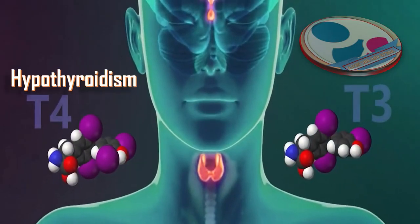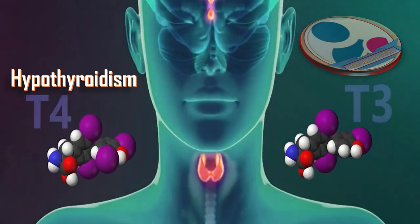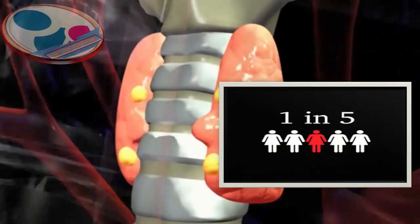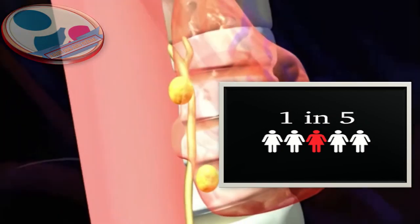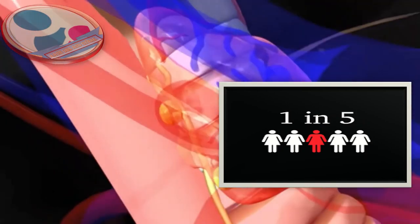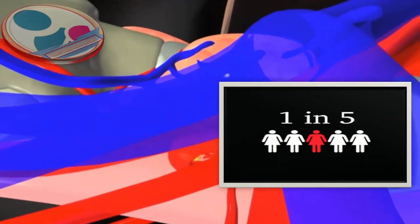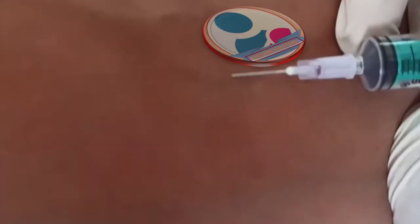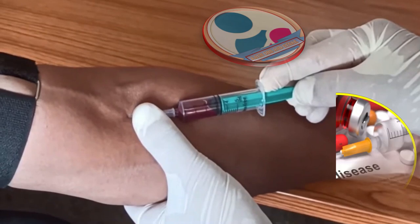Another cause of late ovulation is hypothyroidism — when the thyroid gland is not producing the normal level of thyroid hormones. About one in every five adults has hypothyroidism, but not all of them have ovulation problems. Unlike PCOS, hypothyroidism is easy to diagnose with blood tests and easy to treat with medications.